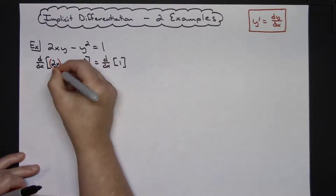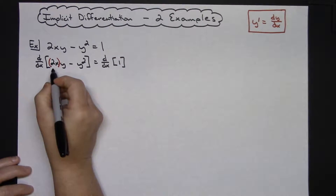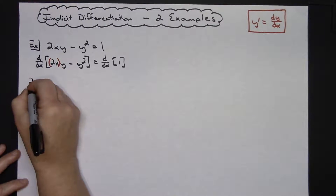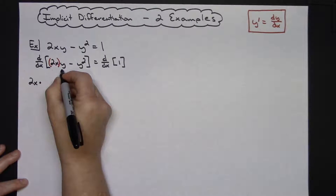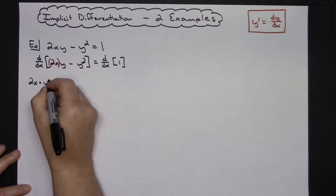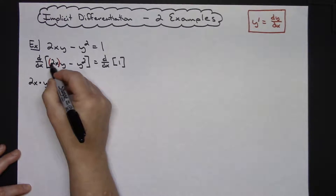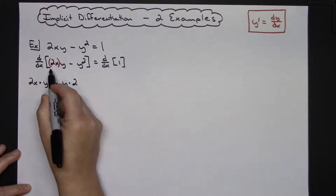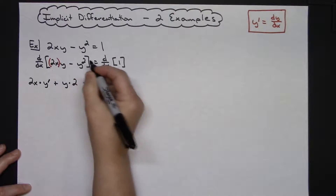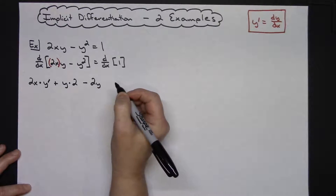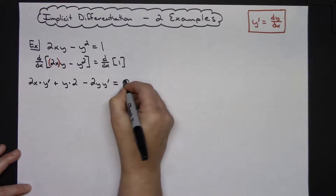I usually group together that coefficient 2x as my first product and then y as the second for the product rule. So implementing product rule: I'm going to have the first, 2x, times the derivative of y. The derivative of y is 1, and then we have to do the chain rule because it's implicit differentiation, so 1 times y-prime, plus the second y times the derivative of 2x, which is just 2. Now minus the derivative of y-squared is going to be 2y with chain rule, so times y-prime. The derivative of 1 is 0.